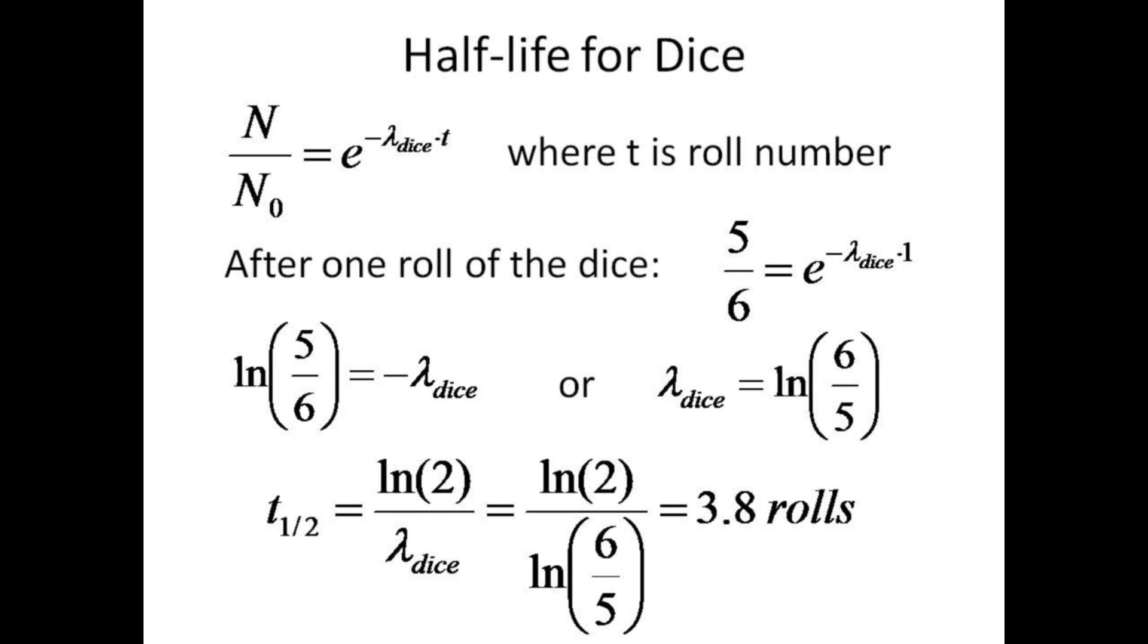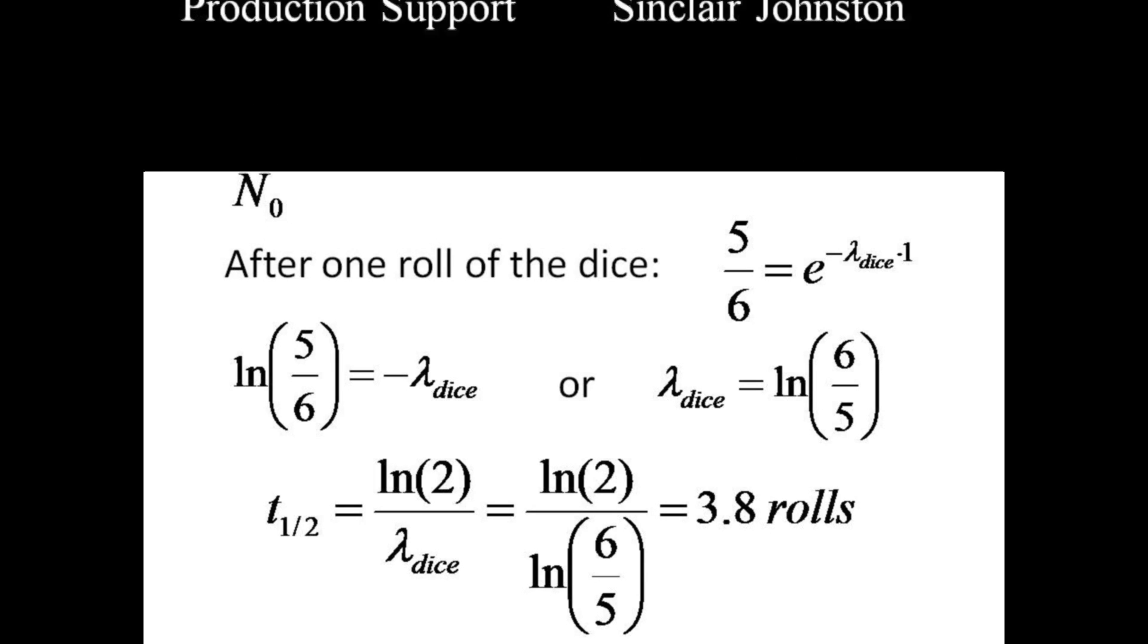Since all the die have six sides, n over n zero is equal to 5 sixths when t equals one roll of the dice. Taking the log of both sides gives a lambda of log of 6 fifths. The half-life should thus be log 2 divided by log 6 fifths, or approximately 3.8 rolls. In approximately 3.8 rolls of all the dice, we will expect to have removed about half of the dice.